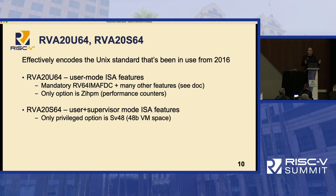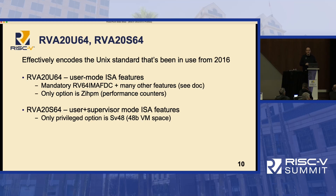RVA20 basically encodes the Unix standard for RISC-V that's been around since 2016. At a workshop at MIT in 2016, we sat around with folks at Red Hat and said what should be the standard thing distros compile for, and we settled on RV64GC plus what was in the privilege spec at the time. We went back and more formally encoded what was the de facto standard back then, and we call it RVA20 because most of those specs were finally ratified in 2019. That is the de facto standard that most distros are using right now.